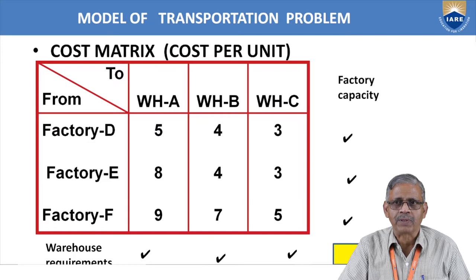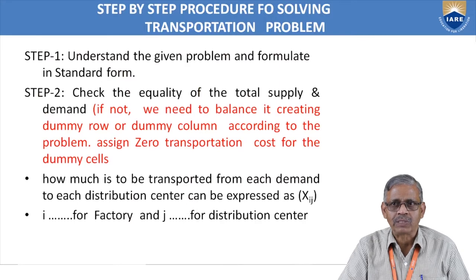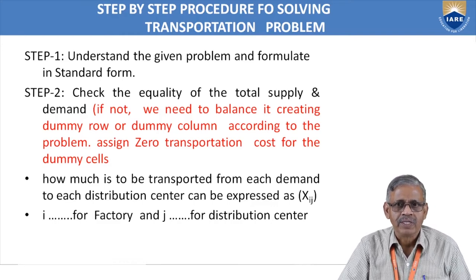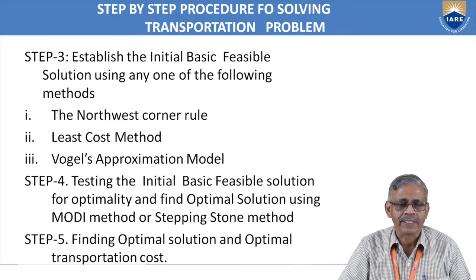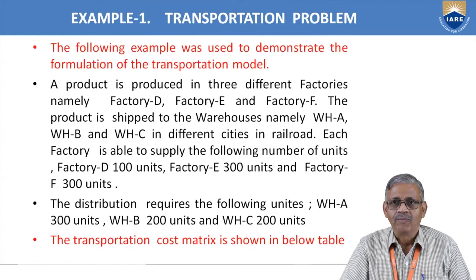To execute this transportation model, we need three things: the cost matrix, the factory capacity for all factories, and the warehouse requirements for all warehouses. The step-by-step procedure: Step 1 — understand the given problem and formulate it in standard form. Step 2 — check the equality of total supply and demand. Step 3 — establish the initial basic feasible solution using one of the following methods: Method 1, North-West corner rule; Method 2, least cost method; Method 3, Vogel's approximation method. After finding the initial basic feasible solution, optimize using the Modi method.